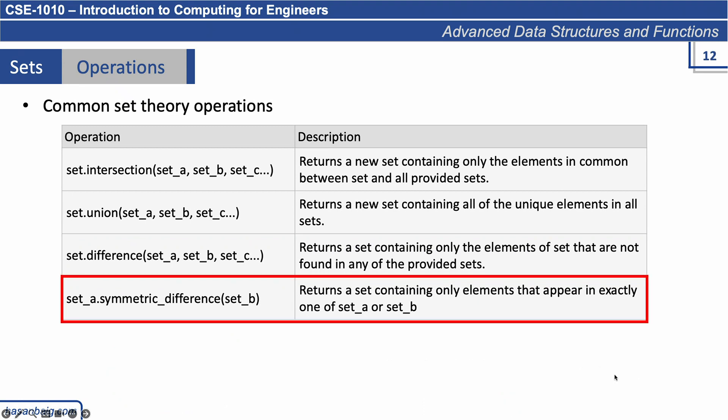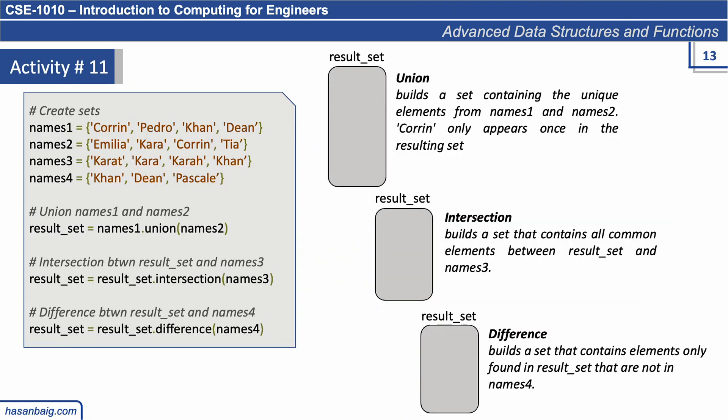The last one is symmetric_difference. If you have a set named set_a and we want to find the symmetric difference, it returns a set containing only elements that appear in exactly one of the sets. If elements are repeating, it removes those elements, containing only the elements which are not common in both of them. So considering this, do this activity.